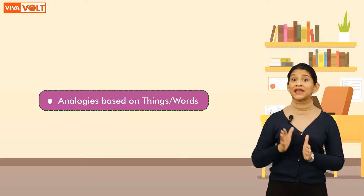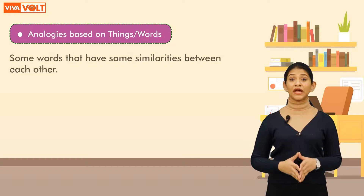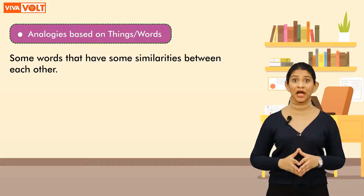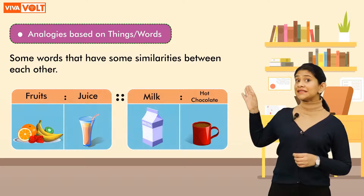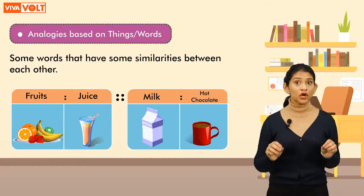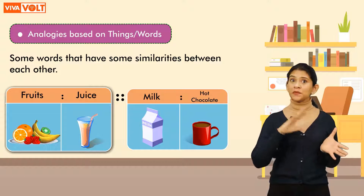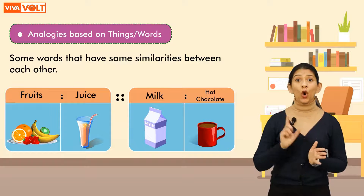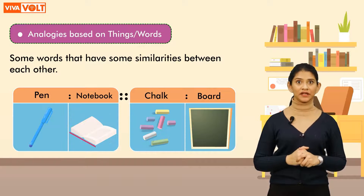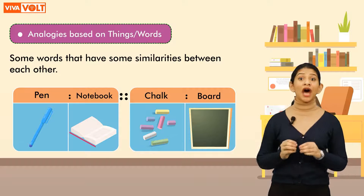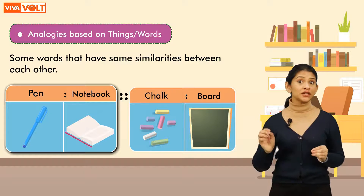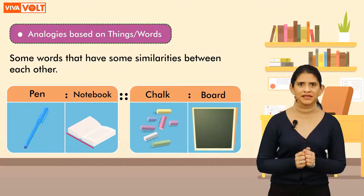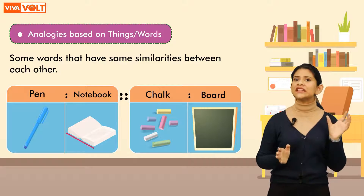The next type of analogy is analogy based on things or words. In this type of analogy, we are given some words that have similarities between each other. For example, fruits are used to make juice — similarly, milk is used to make hot chocolate. As another example, we use a pen to write in a notebook — similarly, we use chalk to write on a board.